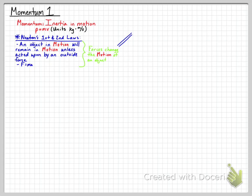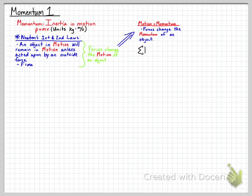When Newton was talking about forces and motion, he was talking about them in terms of momentum. For Newton, motion was momentum — meaning that some mass was moving at some velocity. So basically forces change the momentum of an object. Every time you see the word motion in Newton's first law, think of the word momentum in that place: an object in momentum will remain in momentum unless acted upon by an outside force. In other words, it will keep its momentum unless you decide to change it.